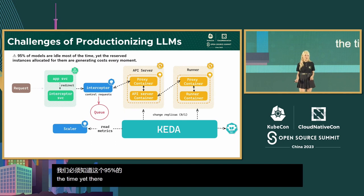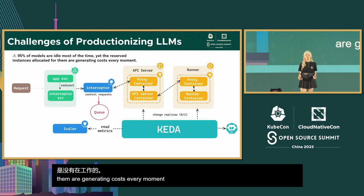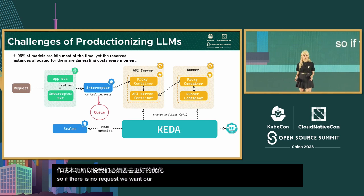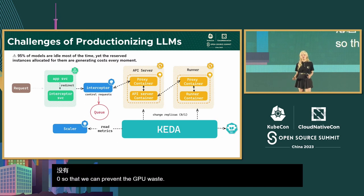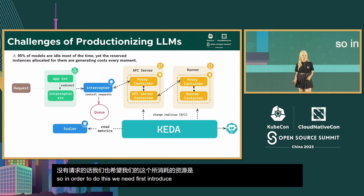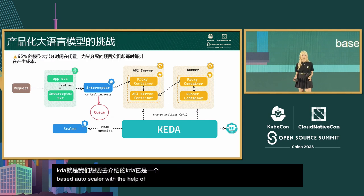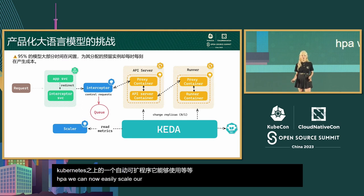That's why in production we need to leverage the power of serverless. If there are no requests, we want our replicas to be zero to prevent GPU waste. To do this, we introduce KEDA — the Kubernetes Event-Driven Autoscaler. With KEDA and HPA, we can now easily scale our replicas from or down to zero.